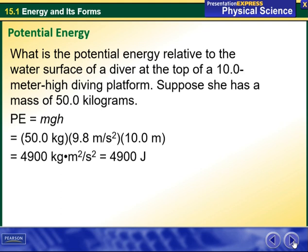Let's take this example: What is the potential energy relative to the water surface of a diver at the top of a 10-meter-high diving platform? Suppose she has a mass of 50 kilograms. PE equals mass times the acceleration due to gravity times the height. So her mass is 50 kilograms, g is constant—always going to be given to you—9.8 meters per second squared, and the height is 10 meters. Once we put them all together in the calculator and multiply them, we have the amount of 4900 joules.